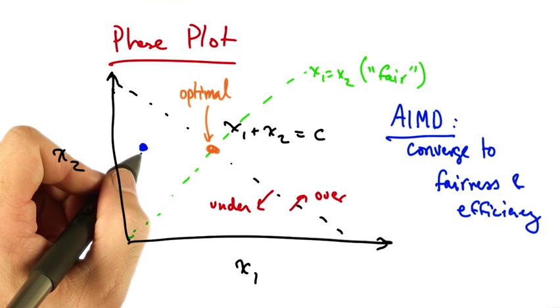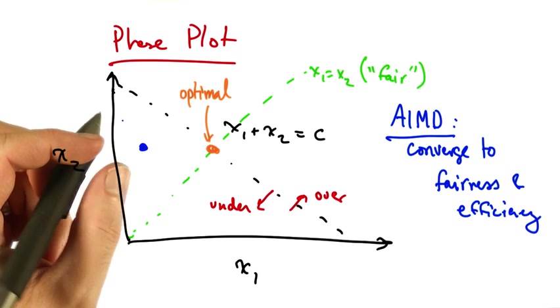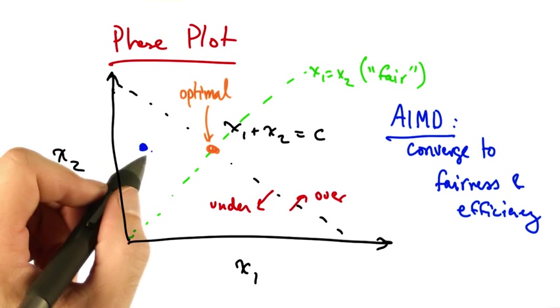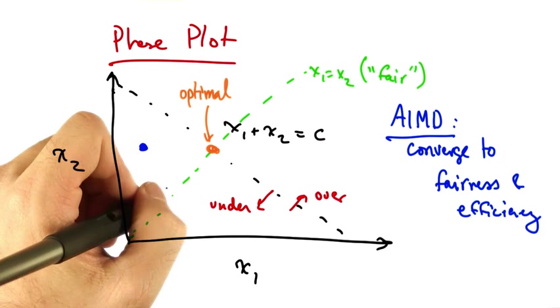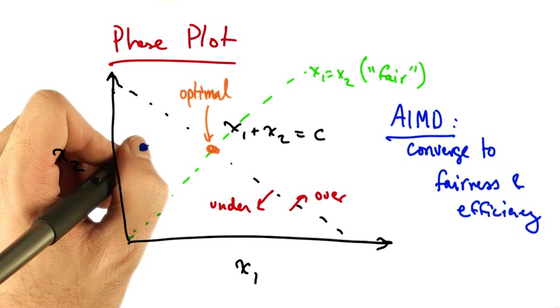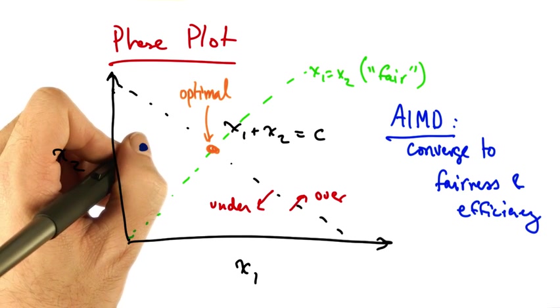Let's suppose that we start at the operating point shown in blue. At this point, both senders will additively increase their sending rates. Additive increase results in moving along a line that is parallel to x1 and x2, since both senders increase their rate by the same amount.